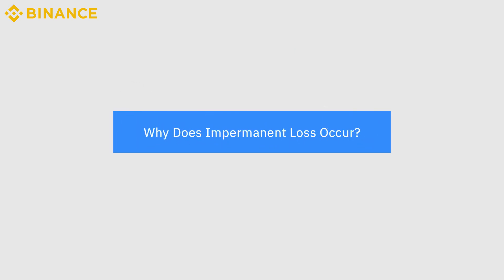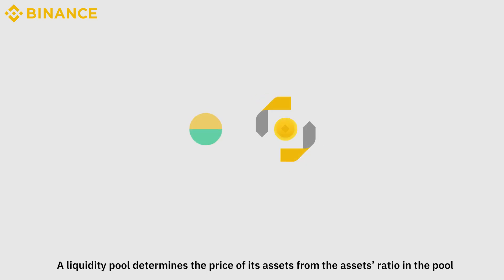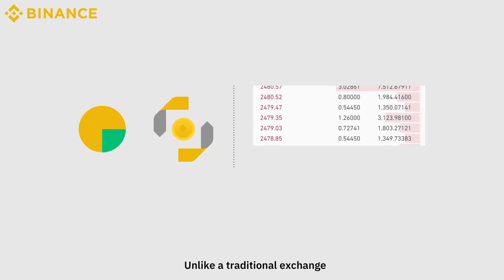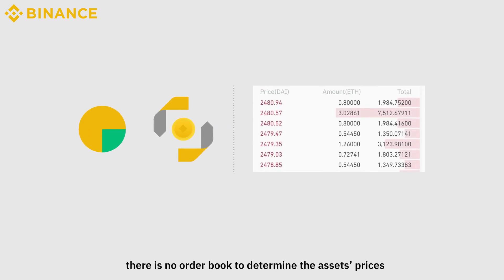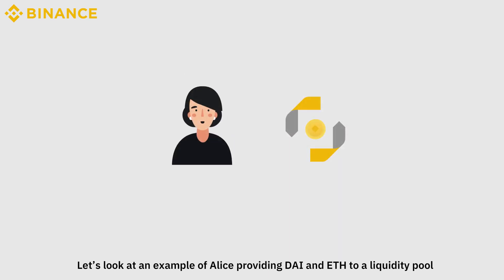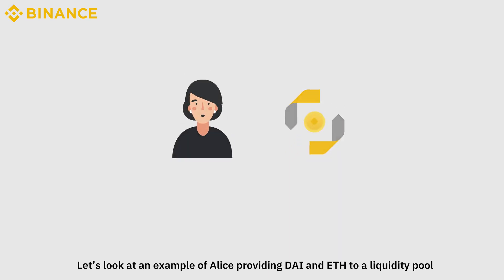Why does impermanent loss occur? A liquidity pool determines the price of its assets from the assets ratio in the pool. Unlike the traditional exchange, there is no order book to determine the assets prices. Let's look at an example of Alice providing DAI and ETH to a liquidity pool.